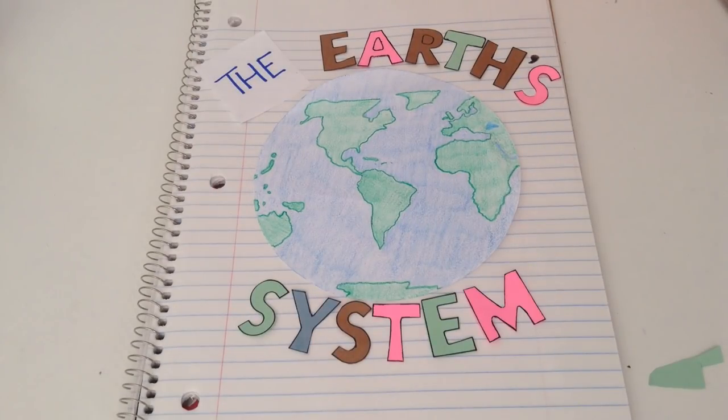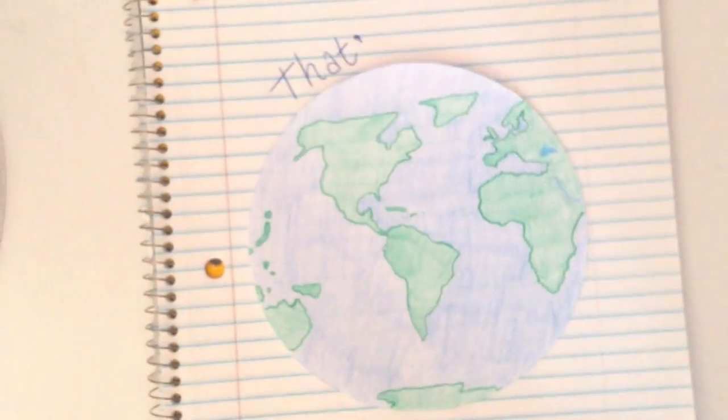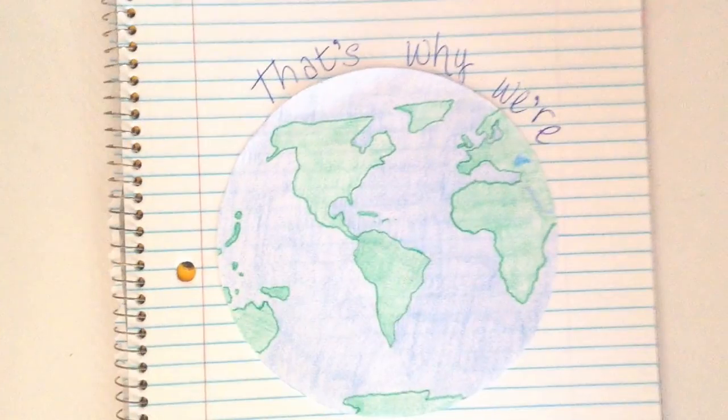The Earth's system. There's atmosphere, biosphere, geosphere, and hydrosphere, so many spheres, that's why we're here.